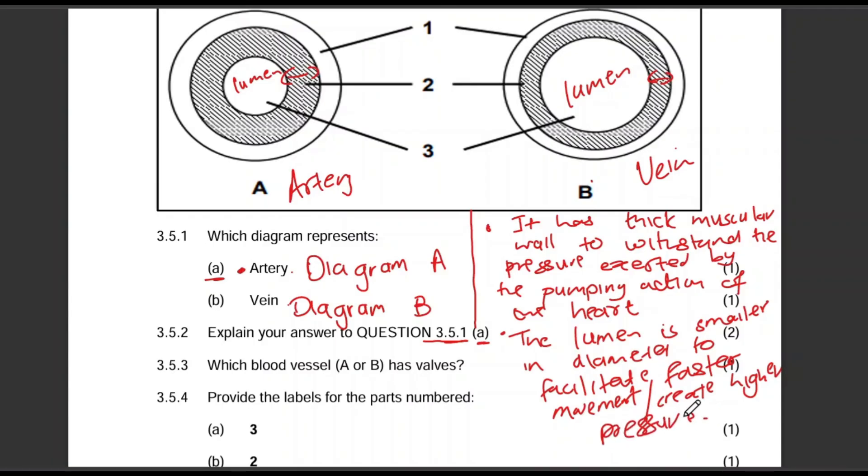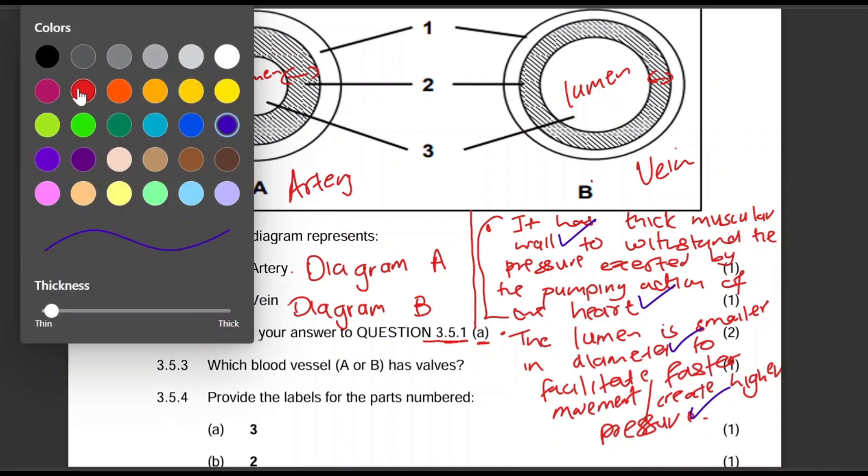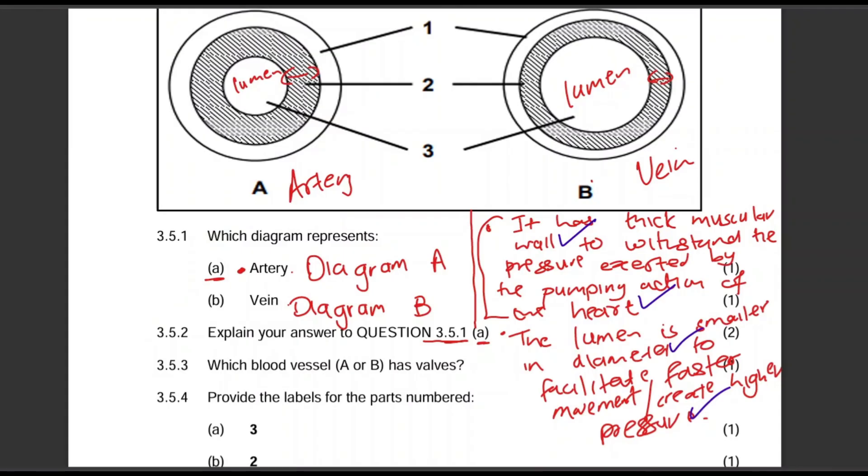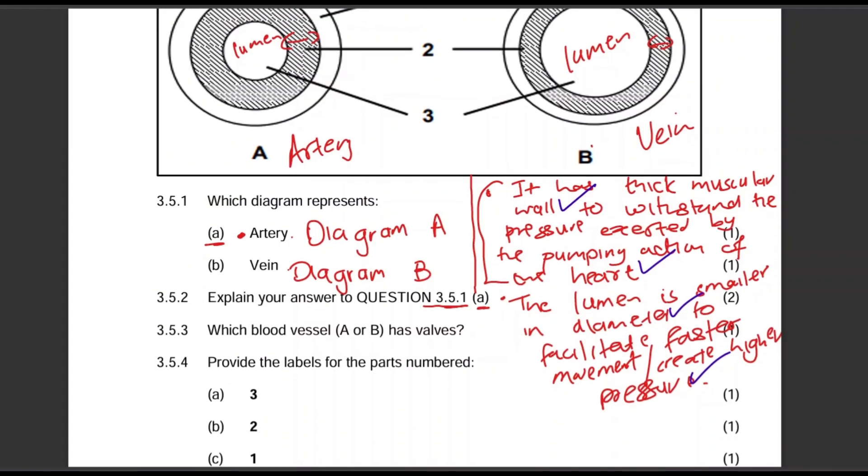So you didn't have to answer for both the muscular and the lumen. So you could have just mentioned this one and you get your two marks. Let me show you how that will be marked. So you speak about a thick muscular wall. Then you speak about the pressure. So you still get your two marks. Other learners could have spoken about the lumen being small in size to obviously create a higher pressure. Okay. You didn't have to mention both. I'm mentioning both because those are the two possible options.